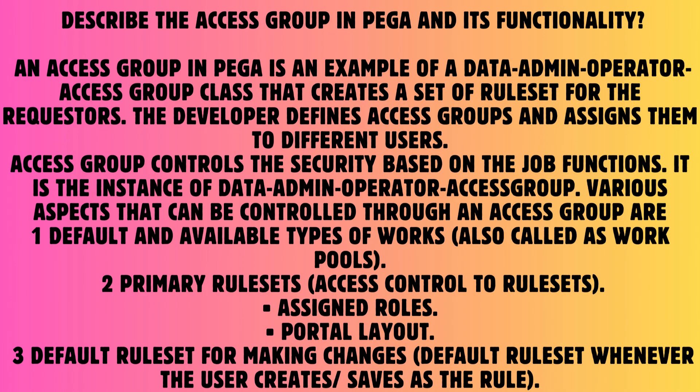Question: Describe the access group in PEGA and its functionality. Answer: An access group in PEGA is an instance of the Data-Admin-Operator-AccessGroup class that creates a set of rule sets for requesters. The developer defines access groups and assigns them to different users. Access group controls security based on job functions. Various aspects controlled through an access group include: 1. Default and available types of works (work pools), 2. Primary rule sets, access control to rule sets, assigned roles, portal layout, 3. Default rule set for making changes whenever the user creates or saves a rule.